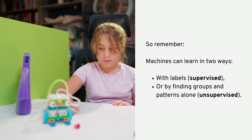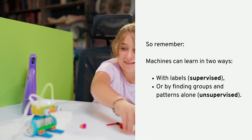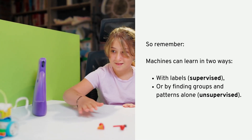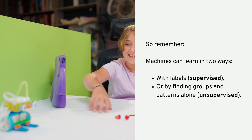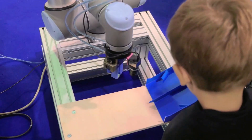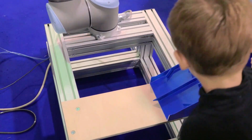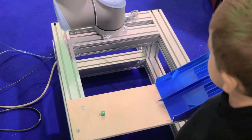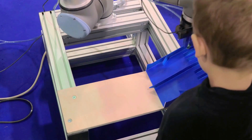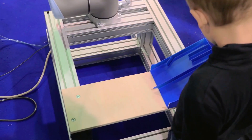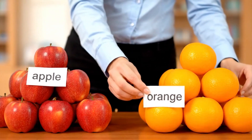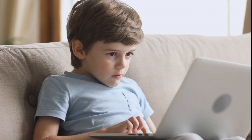So remember: machines can learn in two ways — with labels, which is supervised learning, or by finding groups and patterns alone, which is unsupervised learning. The next time you see a machine doing something smart, like sorting photos or playing a game, ask yourself: was it given labels to help it learn, or did it have to figure things out all on its own? Hungry for more? Check out our other videos on this channel.